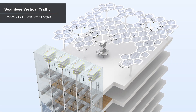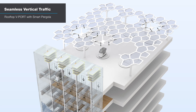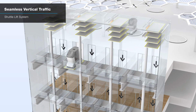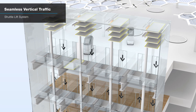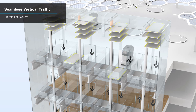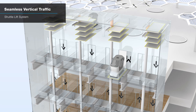Each smart pergola cell is a solar panel and provides power to the propeller unit. The VTOL transforms into a pod bus after landing and gets moved down via the shuttle lift. Each lift has a set of pallets that allows for simultaneous ascent and descent, ensuring efficient pod bus transportation.